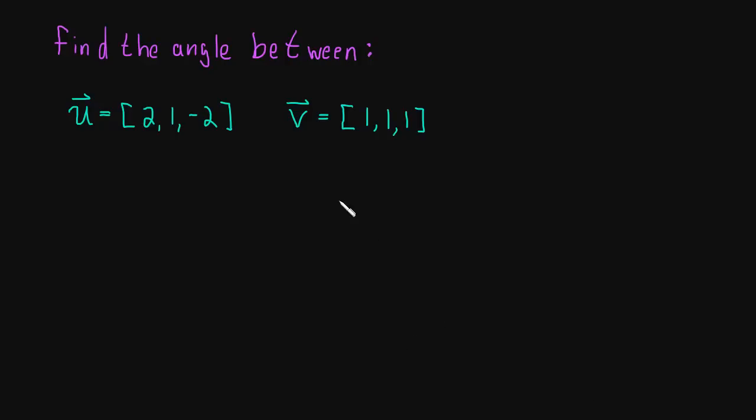Let's use what we know about the dot product to find the angle between these two vectors. We're going to remember our little formula.